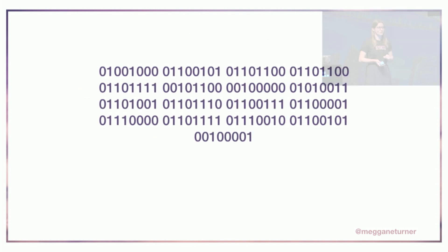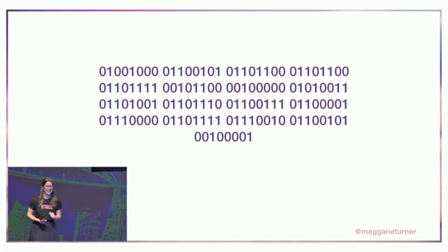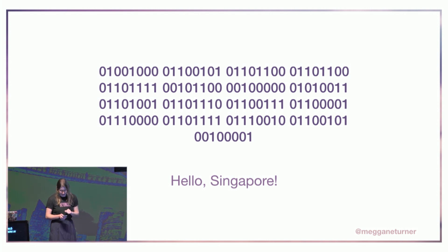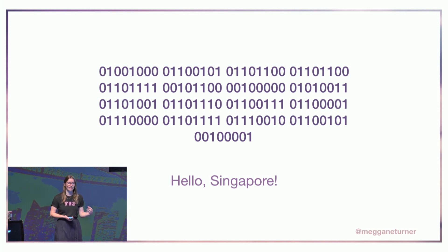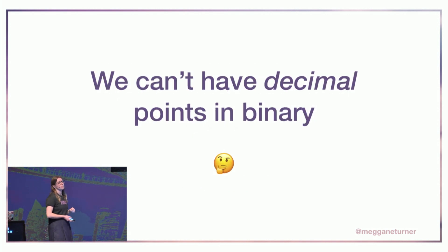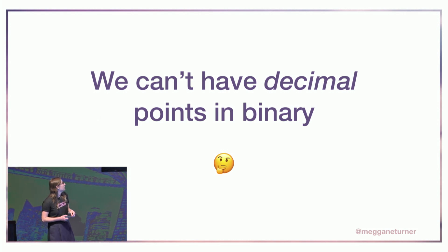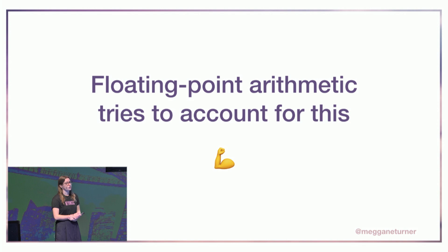Computers are super basic — base 2. Regardless of how you write your number, everything in your computer is going to be stored in binary — it's all just ones and zeros. But we can't have decimal points in binary. Decimal comes from the word 'deca', meaning 10. Binary is base 2, so we can't really represent decimal points safely. So floating point arithmetic tries to account for that.